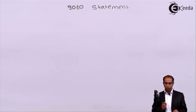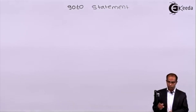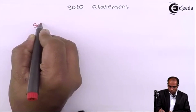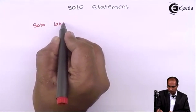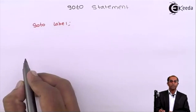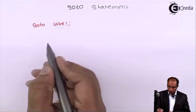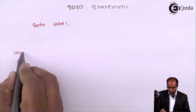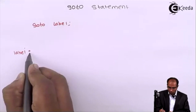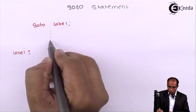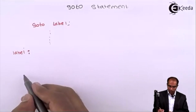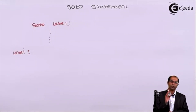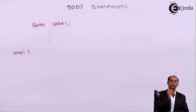Let us see the practical syntax of the goto instruction. The goto instruction goes in this fashion: the keyword is goto, followed by something called a label. Wherever you want to transfer control, you write that label name followed by a colon. There is no specific place where you must write this label — you can write it at the beginning, at the end, or in the middle, anywhere of your choice.